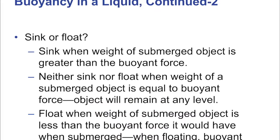Sink or float: an object sinks when its weight is greater than the buoyant force — like a lead block. An object neither sinks nor floats when its weight exactly equals the buoyant force — that's neutral buoyancy. It will remain at any level: put it six inches beneath the surface and it just stays there, neither rising to the surface nor sinking to the bottom. That's perfectly neutrally buoyant.